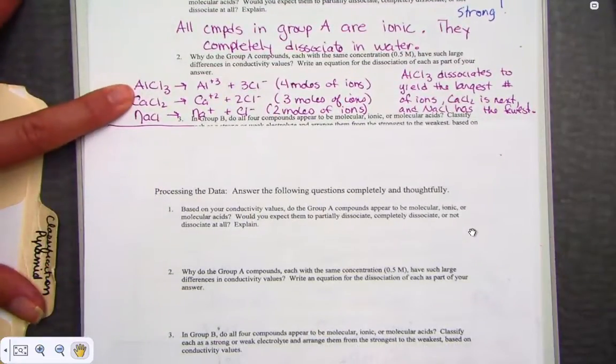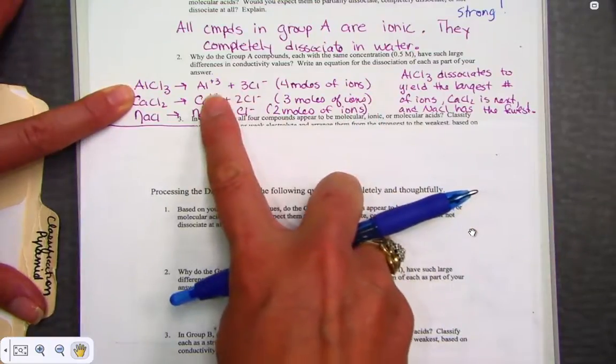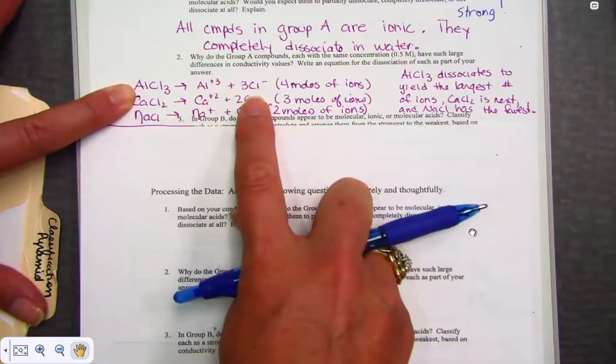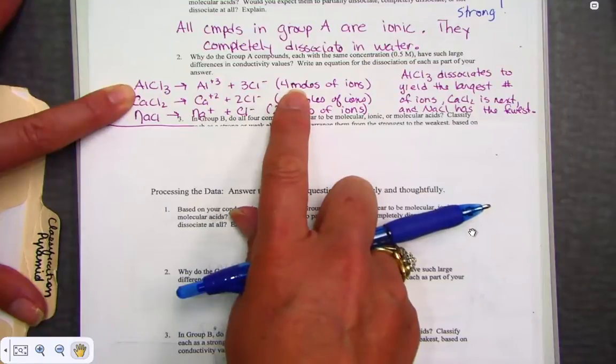Aluminum chloride dissociated into four moles of ions. We get one aluminum, aqueous ion of plus three. Three chlorides, aqueous ions of chloride with a minus one, four moles total. We saw that they had the largest number for conductivity.